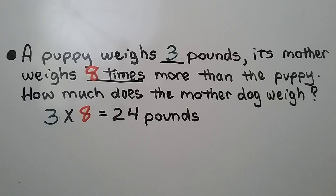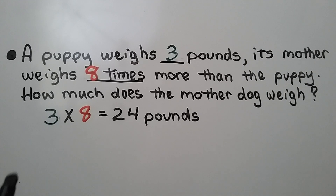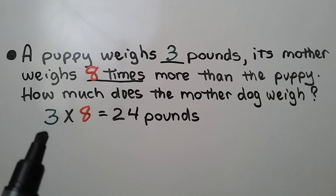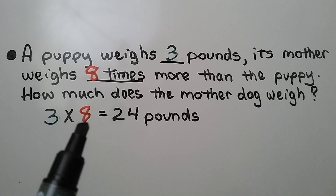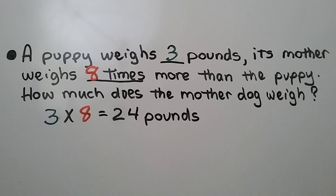A puppy weighs 3 pounds. Its mother weighs 8 times more than the puppy. How much does the mother dog weigh? The puppy weighs 3 pounds and the mother weighs 8 times more, so we do 3 times 8, which is equal to 24 pounds. We know the mother dog weighs 24 pounds.